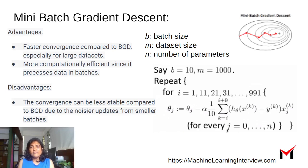Now the convergence can be less stable compared to batch gradient descent due to the noisier updates from smaller batches. So we're taking a middle ground here where we're going slightly zigzag. So it is a little less stable than batch gradient descent, but it also has some advantages of being more efficient.